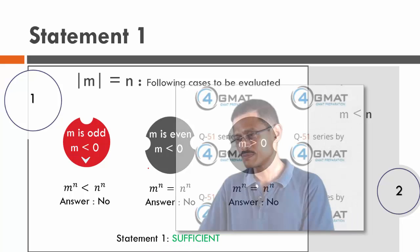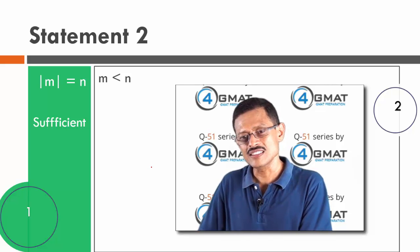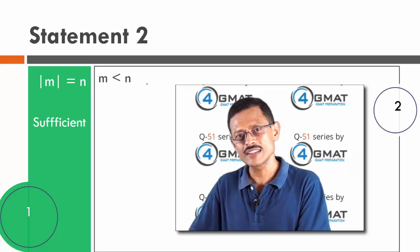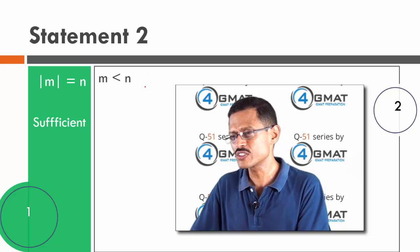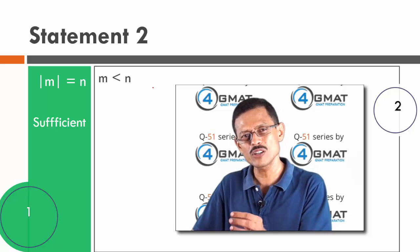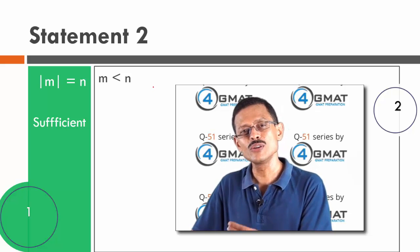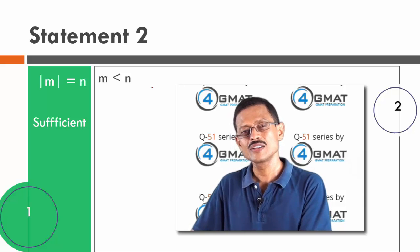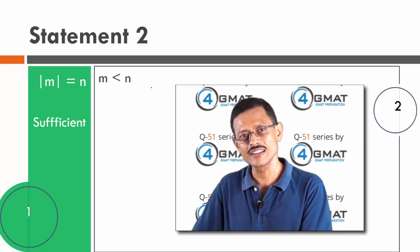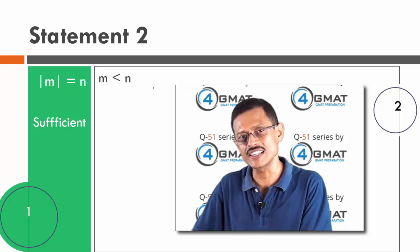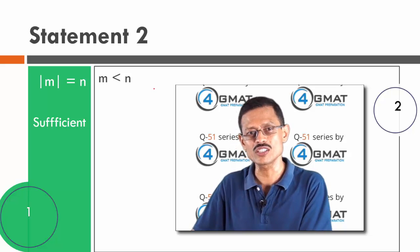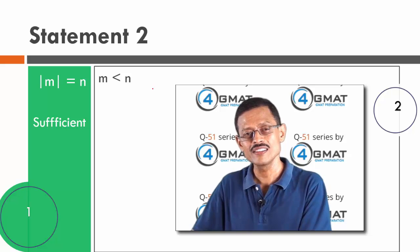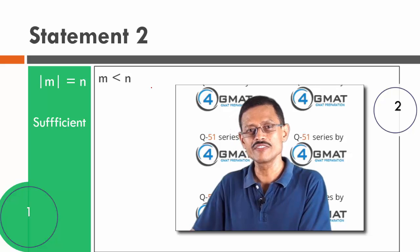Let's move on to Statement 2, which tells us m is less than n. I'm going to look at plugging in values again. I want you to pause the video here, look for cases where m is less than n, and try to find one example where m power n is greater than n power n and another where it is not. If you find both, Statement 2 is not sufficient. Play back the video when you are done.